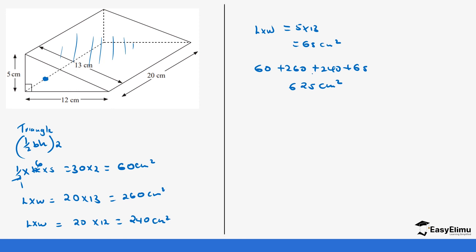So basically the word surface area means you calculate the area of each and every surface. Let's look at another example. In this case we have a prism made up of a polygon. Normally, as we were calculating the area of a polygon we are still going to use that formula. Remember we have two sides — top and bottom — so whatever area we get for one side we multiply by two. We also have rectangles, and there are six of them.